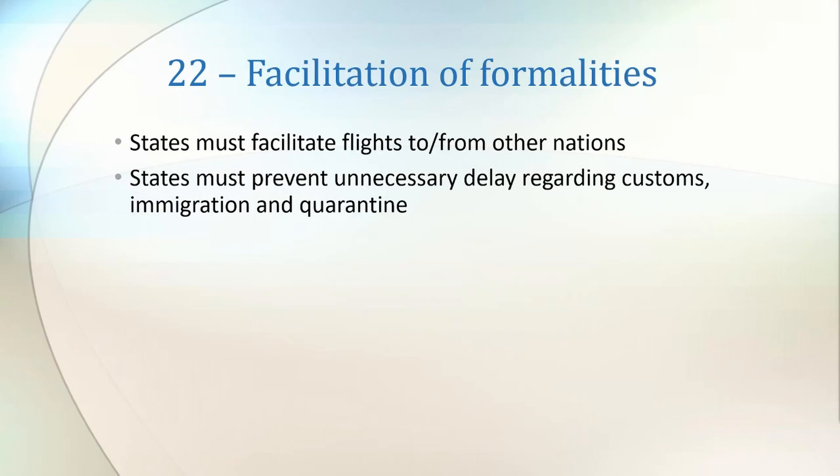Article 22 states that each state agrees to facilitate and expedite navigation by aircraft between states, avoiding unnecessary delays relating to immigration, quarantine, customs or clearance. This helps to ensure fair treatment of states to prevent, for instance, flights from a particular state facing lengthy customs checks not experienced by other states.